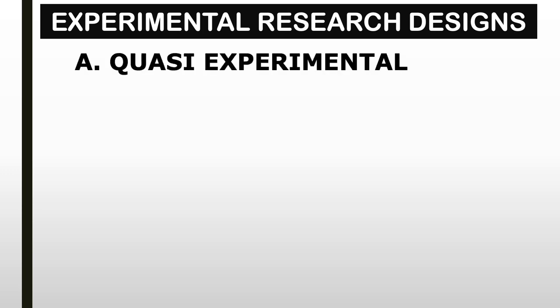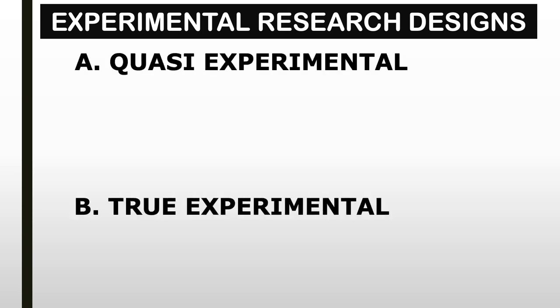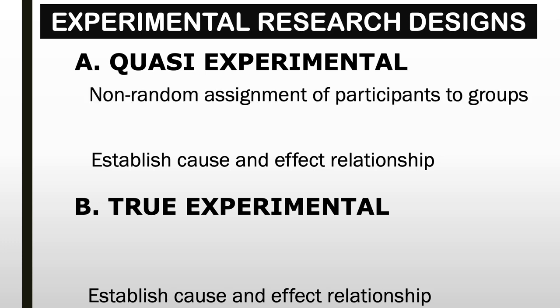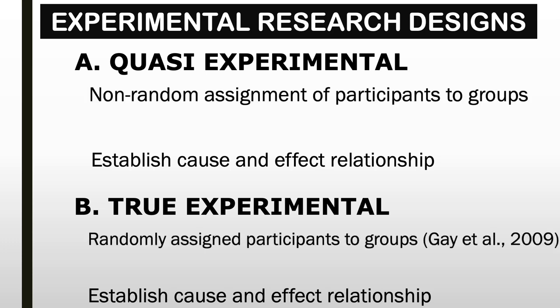Experimental research designs involve quasi-experimental and true-experimental. Where both approaches establish a cause-and-effect relationship, several distinctions are evident between these two approaches. For quasi-experimental research, participants are assigned in a non-random fashion, while random assignment is a distinctive characteristic of a true experimental research.